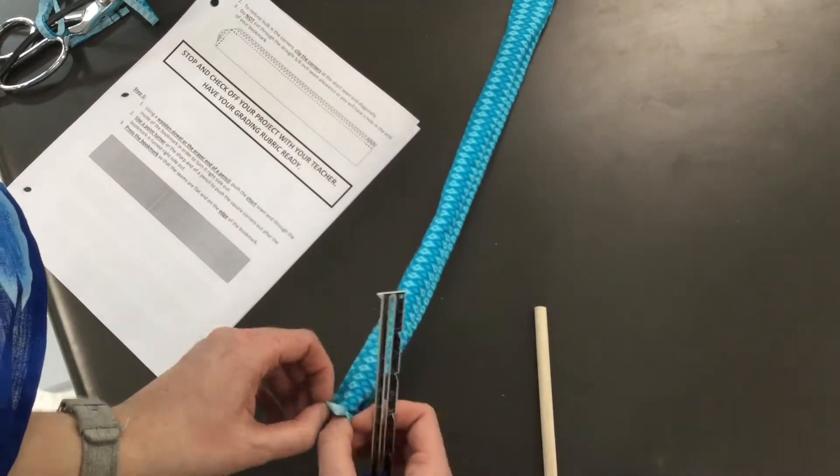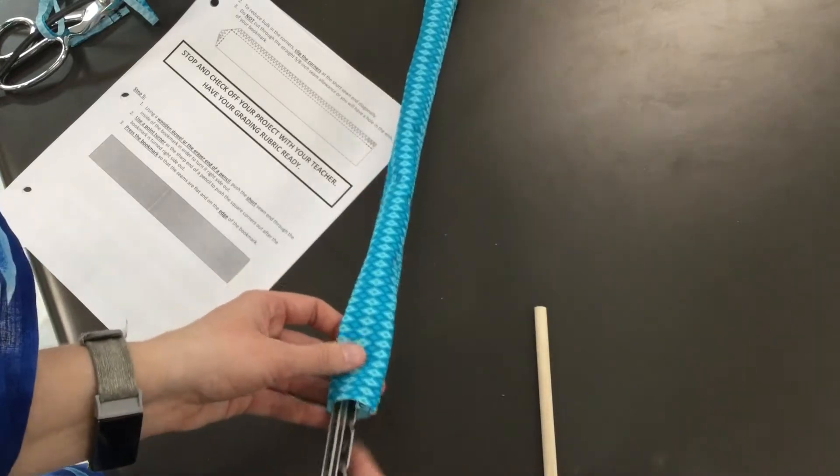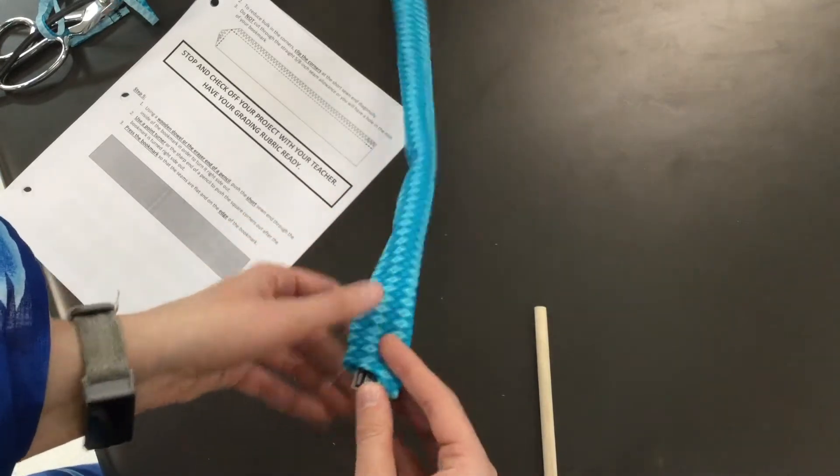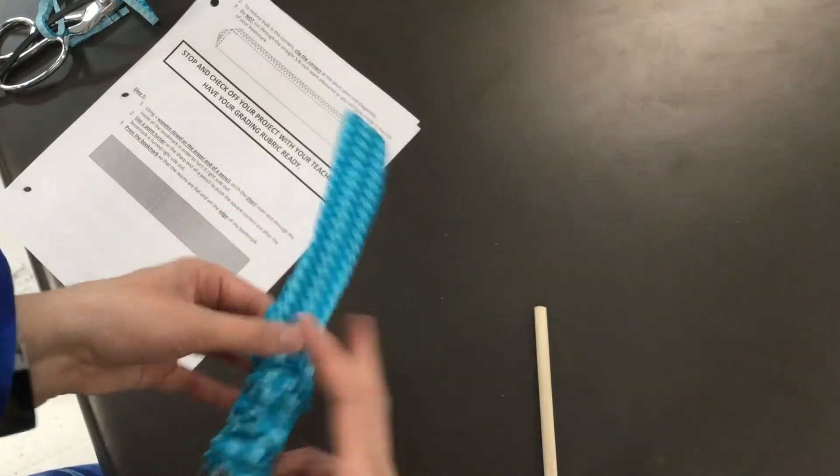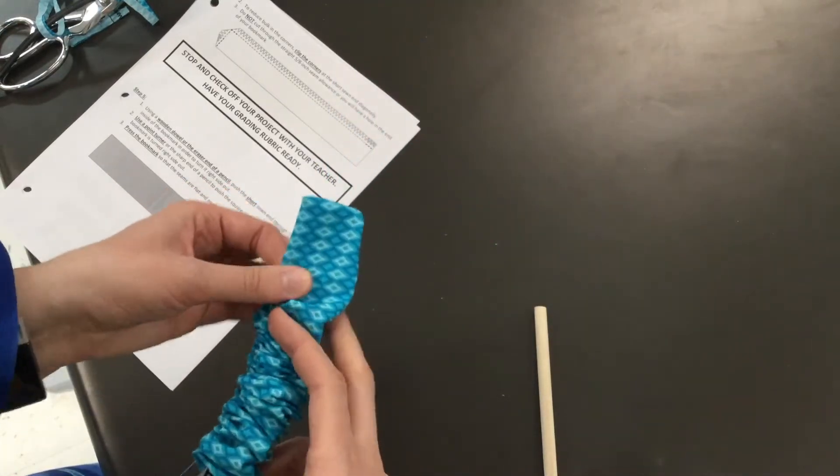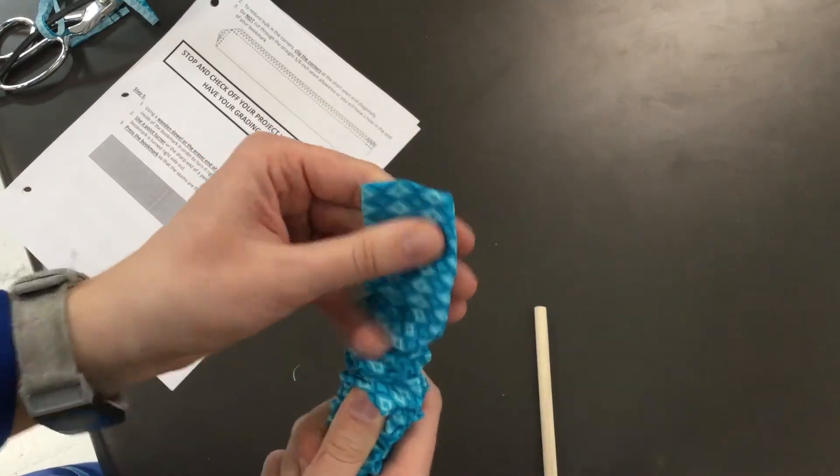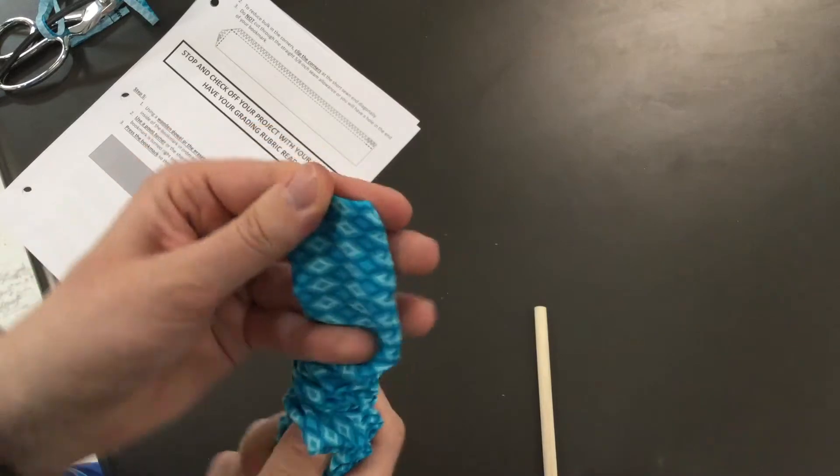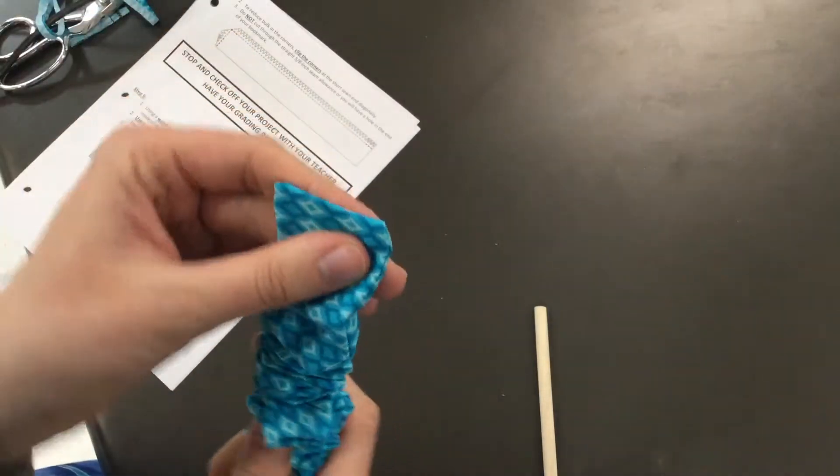You're just gonna stick the seam gauge down in here, just kind of work this corner out a little bit, being careful so we don't poke a hole through. There we go—looks pretty nice and square now.